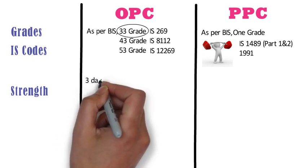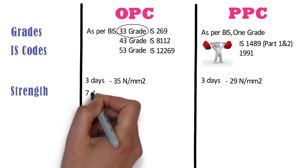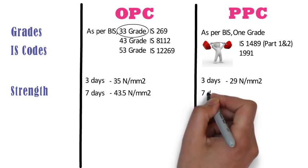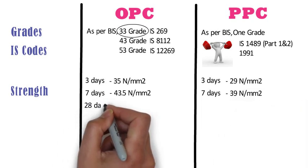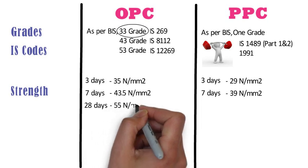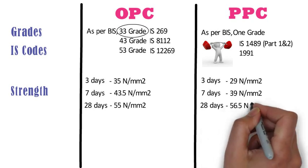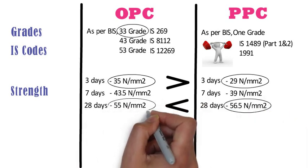Strength. In 3 days, OPC achieves a compressive strength of 35 N/mm², whereas PPC achieves 29 N/mm². In 7 days, OPC achieves 43.5 N/mm², whereas PPC achieves 39 N/mm². In 28 days, OPC achieves 55 N/mm², whereas PPC achieves 56.5 N/mm². The initial strength of OPC is higher than PPC, whereas the long-term strength of PPC is higher than OPC.